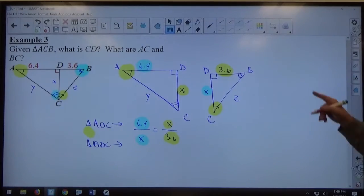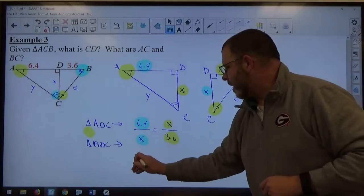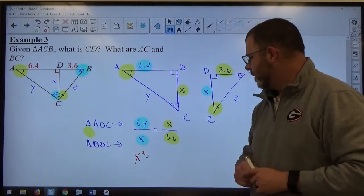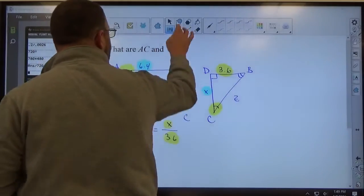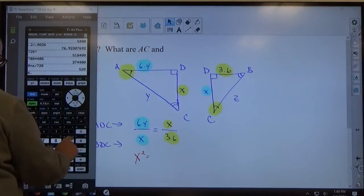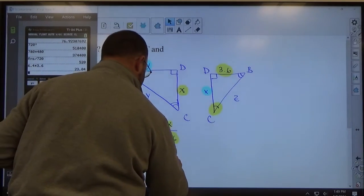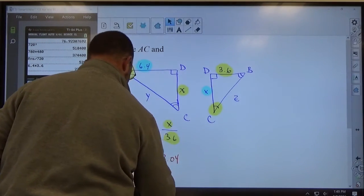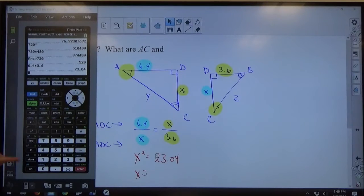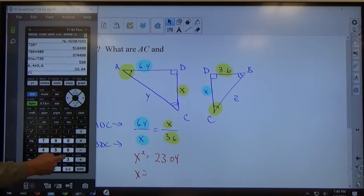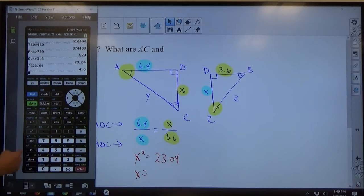Once I get this proportion set up properly, if I cross multiply, I'm going to get X times X, which is X squared, equals 6.4 times 3.6, and if X squared equals something, X equals the square root of that something. So, square root of 23.04 is 4.8.